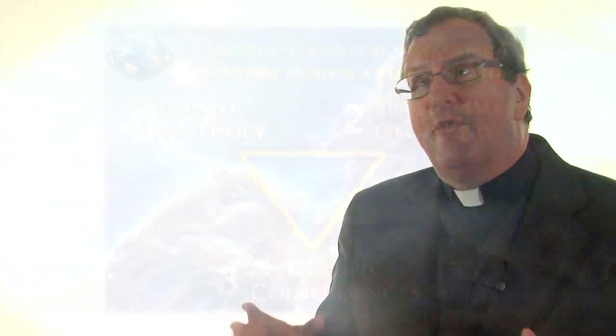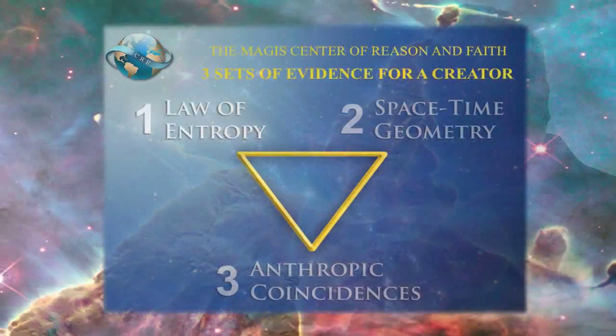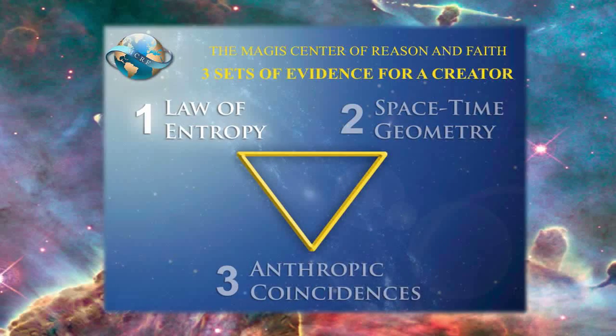I'm Fr. Robert Spitzer, and we've been talking about evidence for the existence of a creator, supernatural design — the evidence of God that comes from contemporary physics and astrophysics. We've been specifically talking about the evidence for a beginning of the universe that comes from entropy, as you can see from our diagram. And now we've moved on to the area of evidence that comes from space-time geometry.